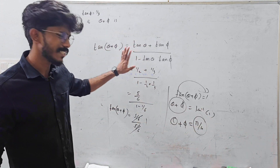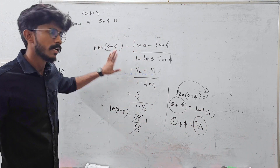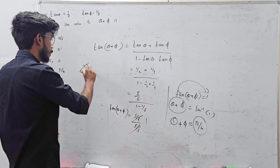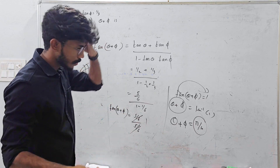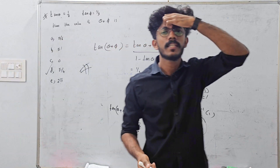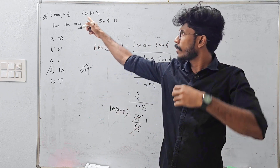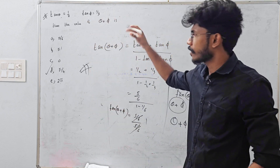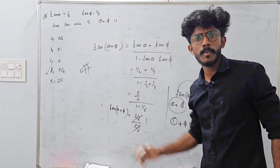The answer is option D: theta plus phi equals pi by 4 — since tan of pi by 4 equals 1. That is a basic question. For plus 1 or plus 2 entrance exams, you need to use this equation.